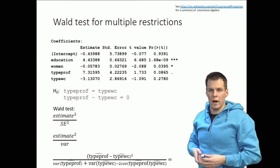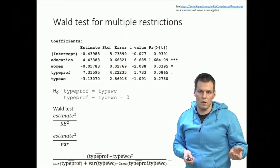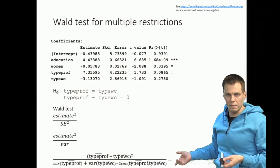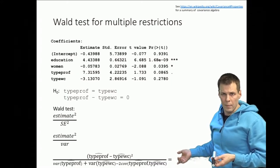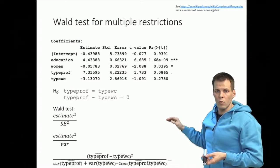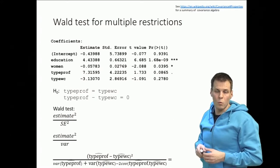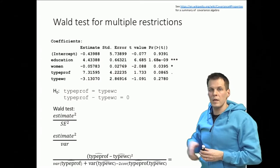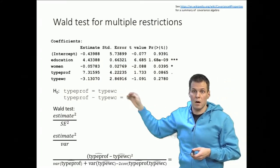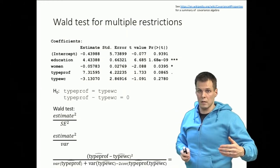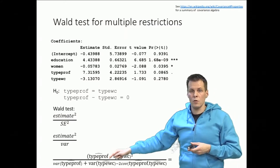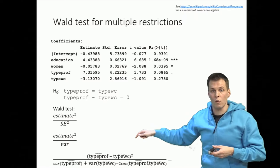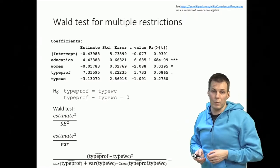We know that the variation of type professional and type white collar are captured by their standard errors. But what about the covariance term between the estimates? We can think of it this way: if the blue collar occupations used as the reference category happen to have slightly lower prestige in a given sample, then both the type professional and type white collar coefficients — which are evaluated against blue collar — will both increase a bit. So when these two estimates vary over repeated samples, they will also co-vary and be correlated.